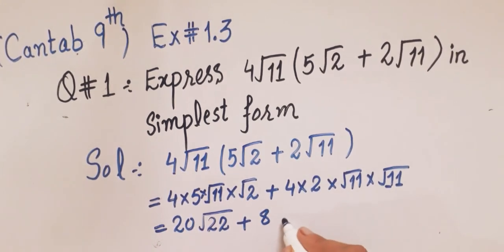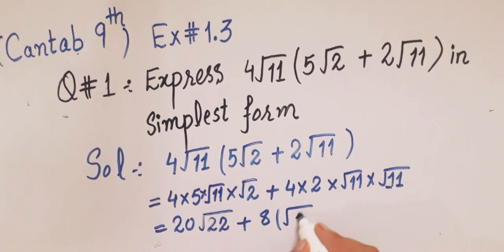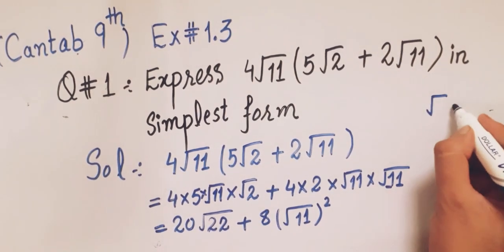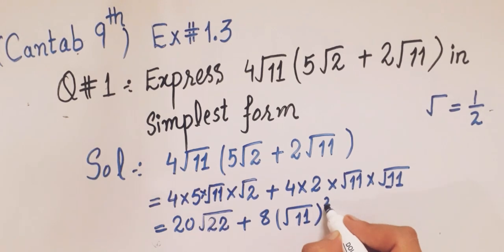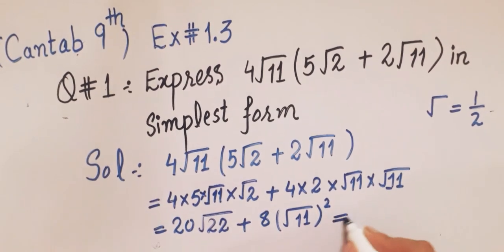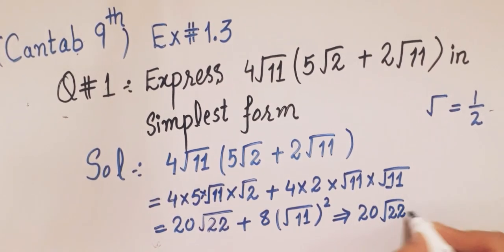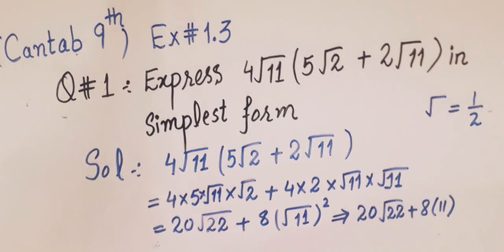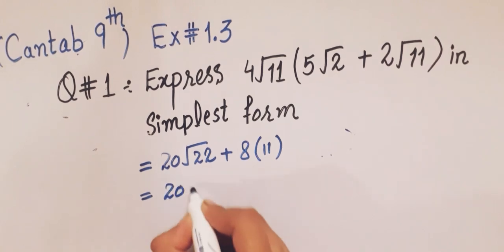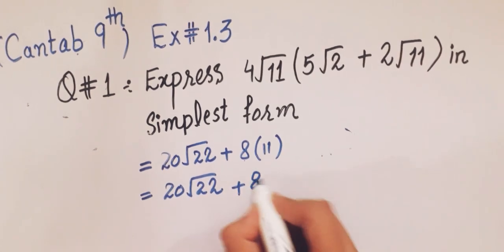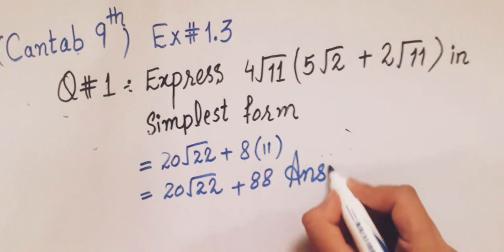We know that the power of square root is 1 by 2, so this square root will be cancelled by the square, and we get 20 square root 22. Then 8 into 11 is 88. So we get 20 square root 22 plus 88. This is the answer to this question. I hope you understand easily.